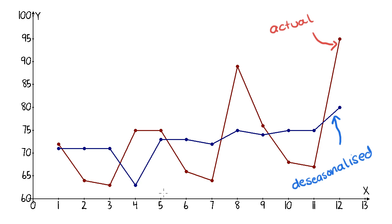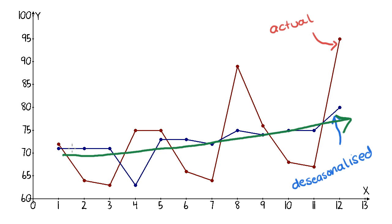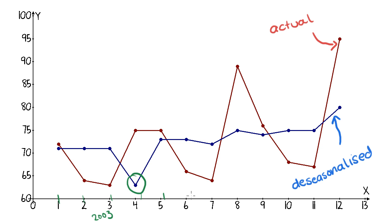When we plot both sets of time series data on the same axes, you can see what de-seasonalizing is doing. The actual data shown in red has big fluctuations — high peaks and troughs — because it's quite seasonal. The blue de-seasonalized line is much flatter and straighter; we've removed the crazy fluctuation so we can see what's really happening. Over time there's a slight positive trend, which is good.